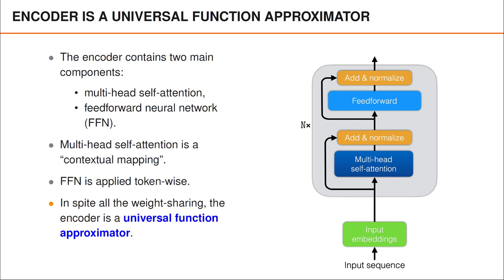Interestingly, by combining these components and stacking many encoder layers, we obtain a universal function approximator. This happens in spite of all the weight sharing that we are using, which may not be obvious. If we include positional encodings in the input, the encoder can represent any mapping from one sequence to another, and that's a pretty amazing property.